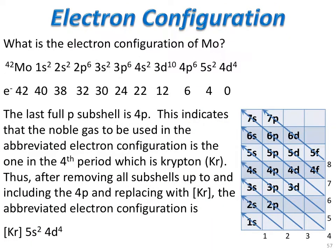Let's look at the configuration of molybdenum. Molybdenum is element number 42, so 42 electrons is a lot to put in an electron configuration. Molybdenum becomes 1s2, 2s2, 2p6, 3s2, 3p6, 4s2, 3d10, 4p6, 5s2, 4d4. That's a lot of orbital designations.